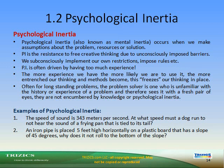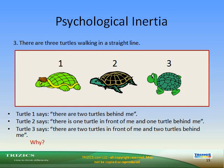Examples of psychological inertia: The speed of sound is 343 meters per second — at what speed must a dog run to not hear the sound of a frying pan tied to its tail? An iron pipe is placed 5 feet high horizontally on a plastic board with a 45-degree slope — why does it not roll to the bottom? There are 3 turtles walking in a line: Turtle 1 says there are 2 turtles behind me; Turtle 2 says there is 1 in front and 1 behind; Turtle 3 says there are 2 in front and 2 behind. Why is this?